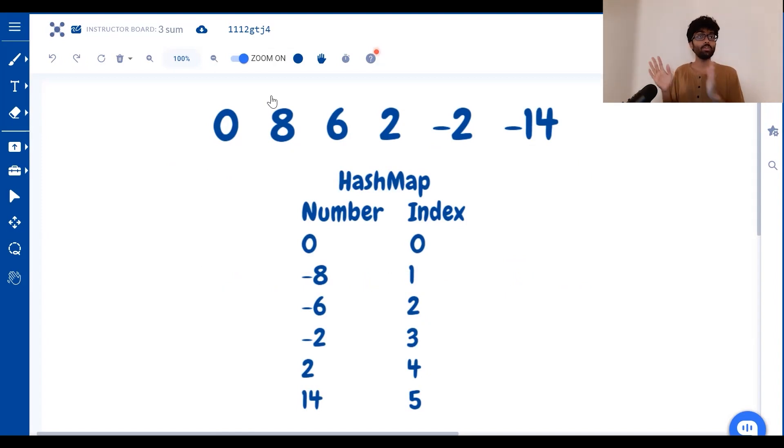Now what we have to do is tackle the left hand side. How do we calculate Arr of i plus Arr of j? We've got to take every single pair of these numbers. We start off at 0. What are the numbers that we can pair with 0? 8, 6, 2, minus 2 and minus 14.